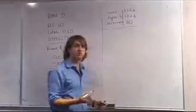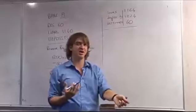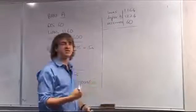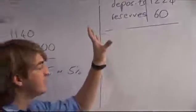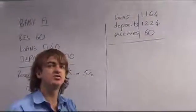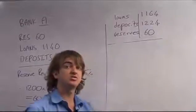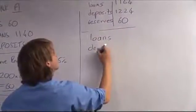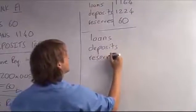Now what happens if those people use that money? If they use it and it doesn't come back into your bank — it goes to Banks B, C, and D — what happens to your loans, deposits, and reserves once those checks have been used? This is the scenario after the checks have been granted and then actually spent.